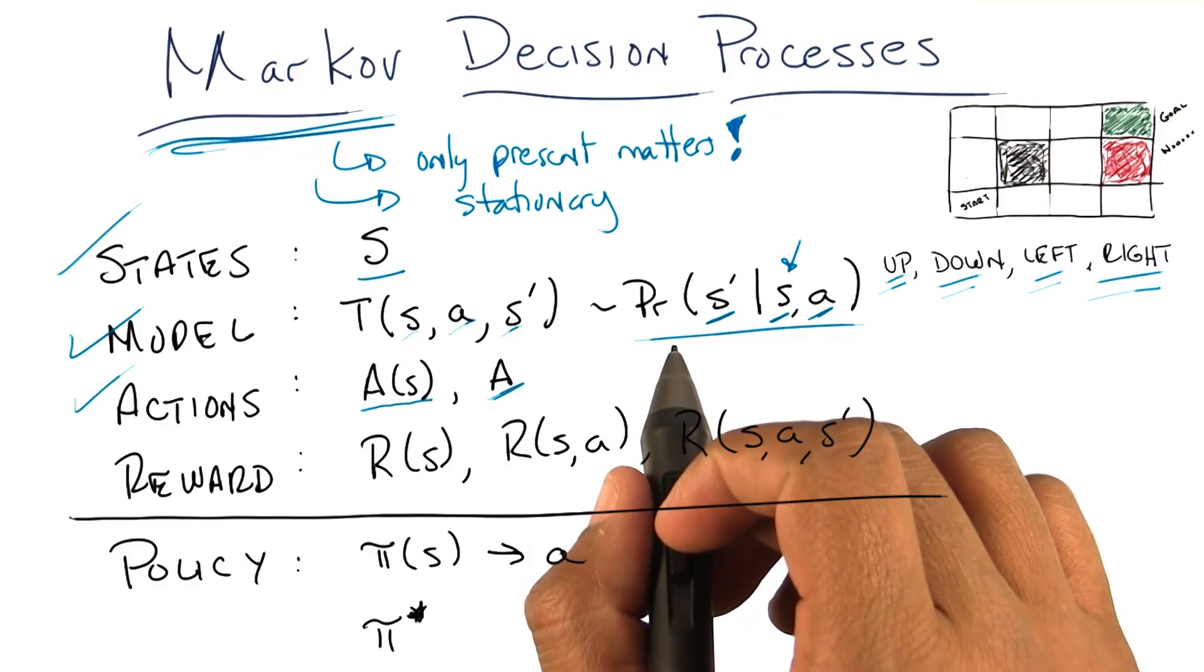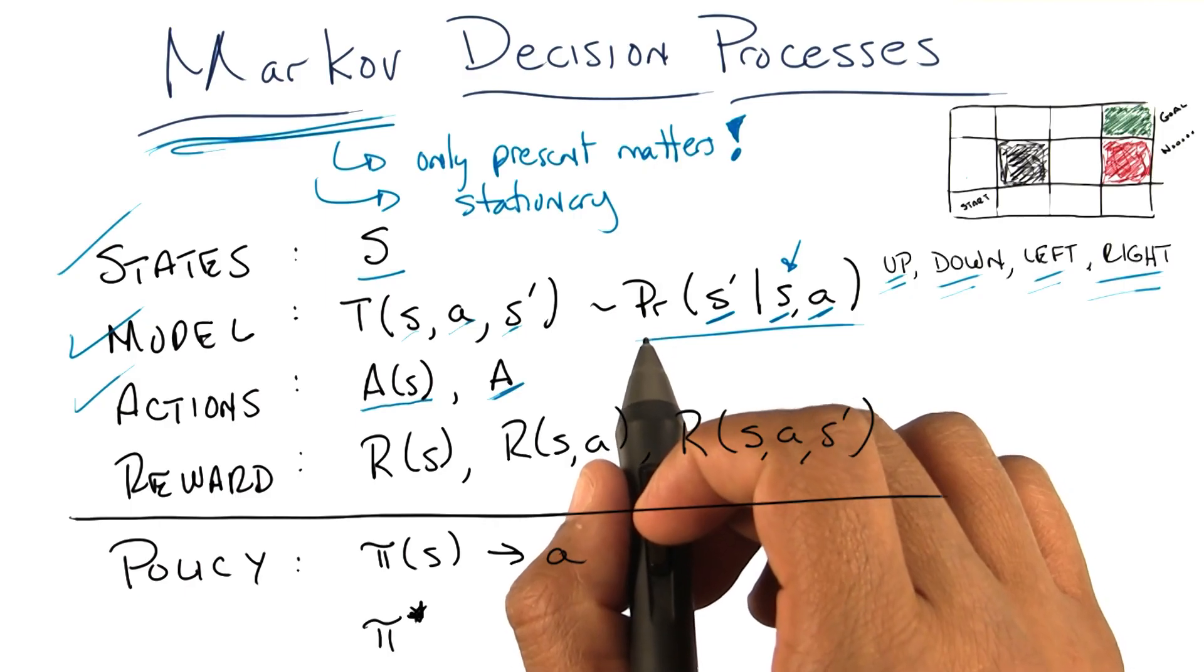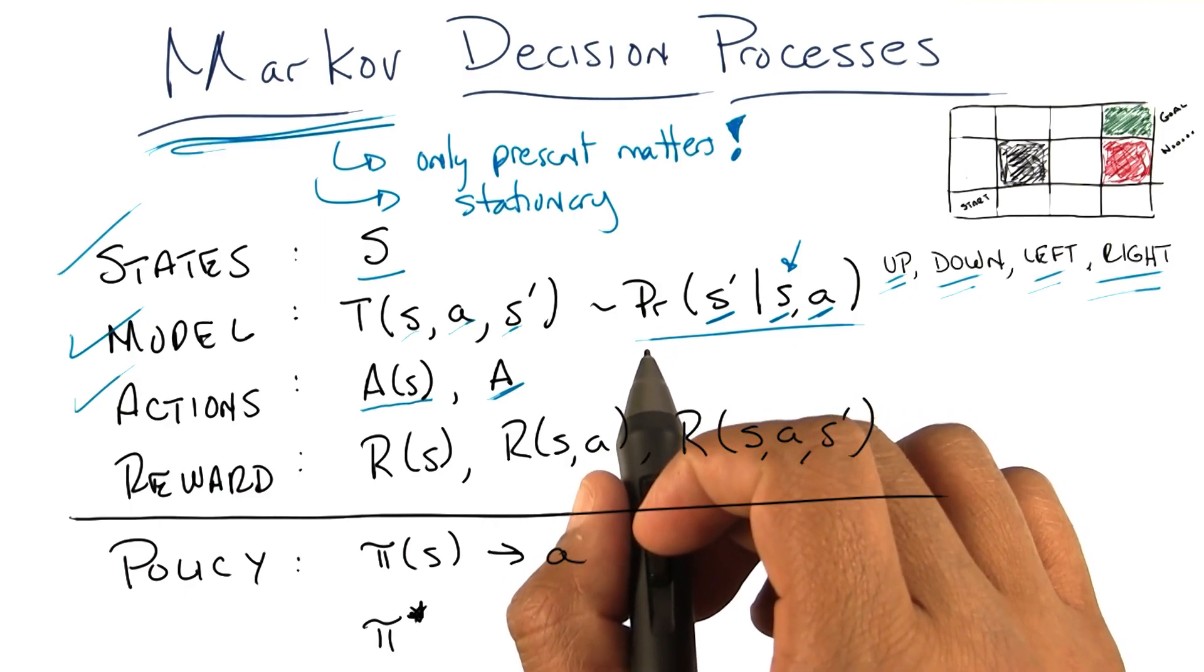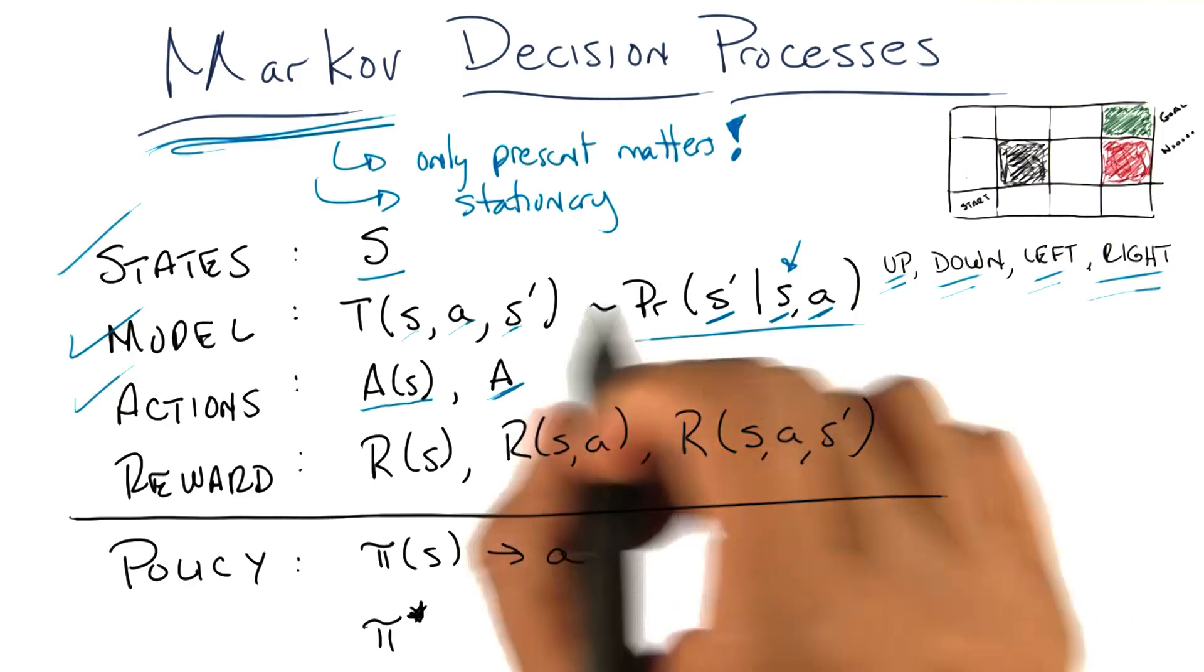Does that mean that the agent can never leave the start state? No. The agent can leave the start state any time it takes the action that gets it out of the start state. How is it stationary then? It's not stationary. The world is stationary.